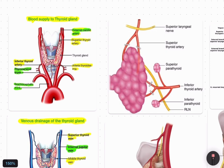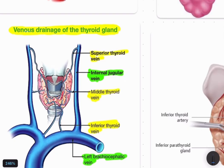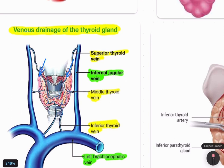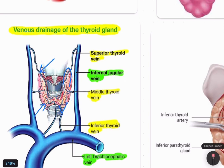The thyroid gland is a butterfly-shaped gland having two lobes connected by an isthmus. Each lobe has an upper pole and a lower pole. So we have two lobes, each lobe has two poles, and these two lobes are connected by the isthmus.